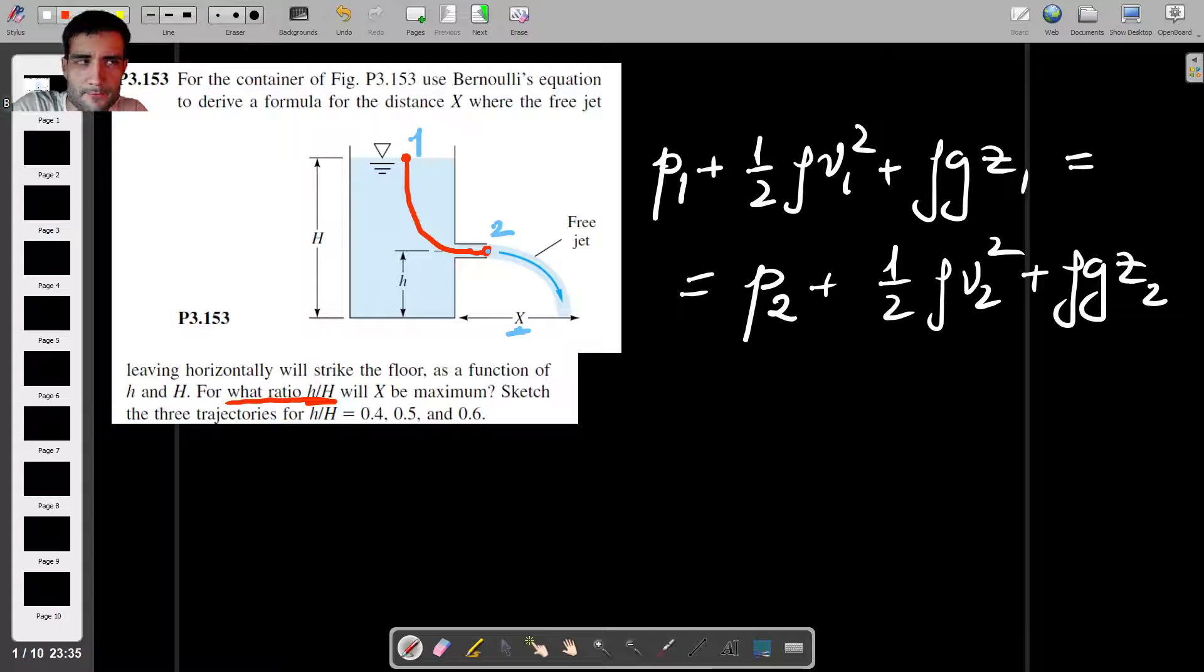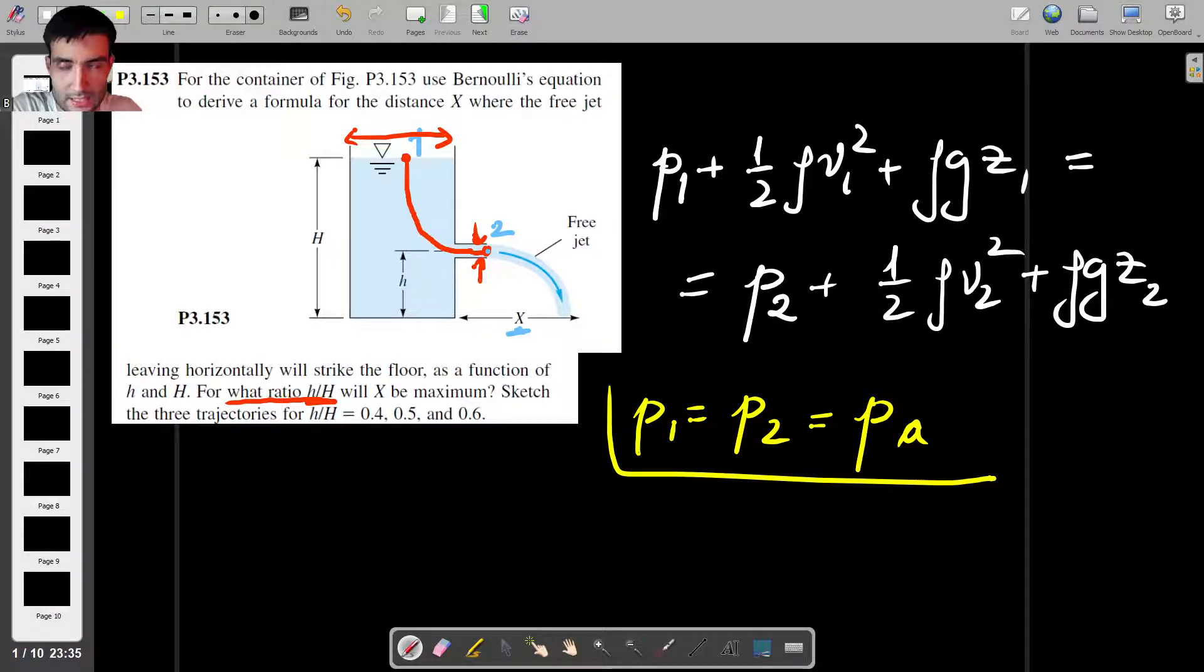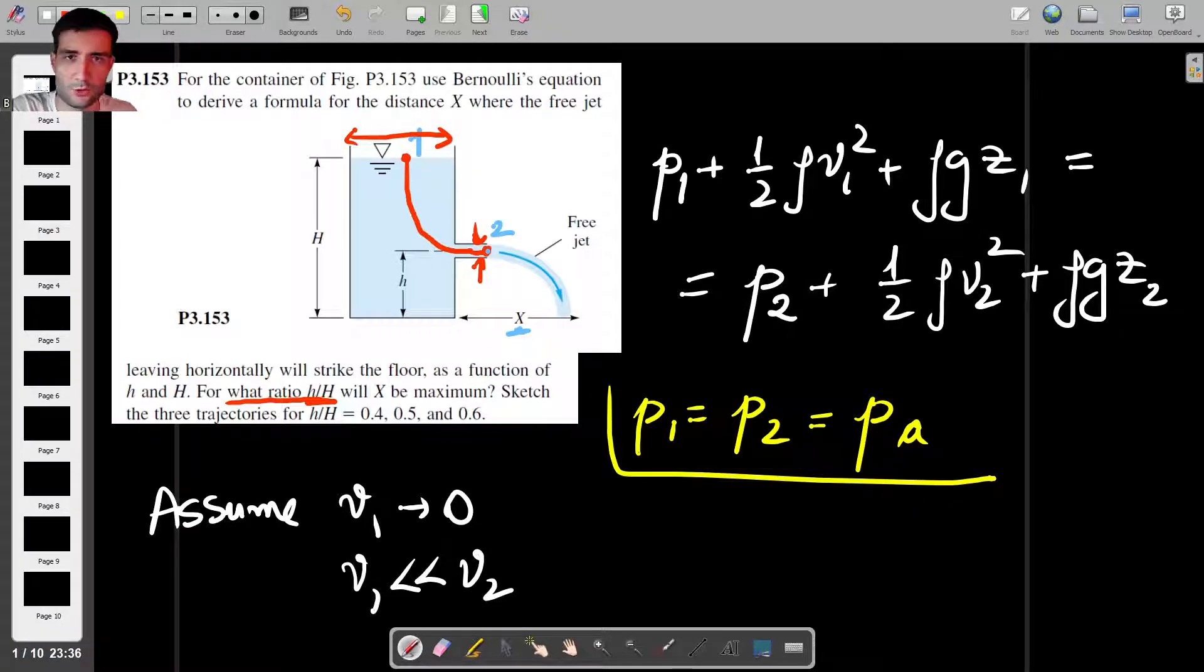Let's apply Bernoulli's theorem. I'm going to write that P1 plus half rho V1 squared plus rho gz1 equals P2 plus half rho V2 squared plus rho gz2. Now, P1 and P2, we actually know what they are because points 1 and 2 are exposed to the outside environment, which means that P1 is equal to P2 and they're both equal to the atmospheric pressure.